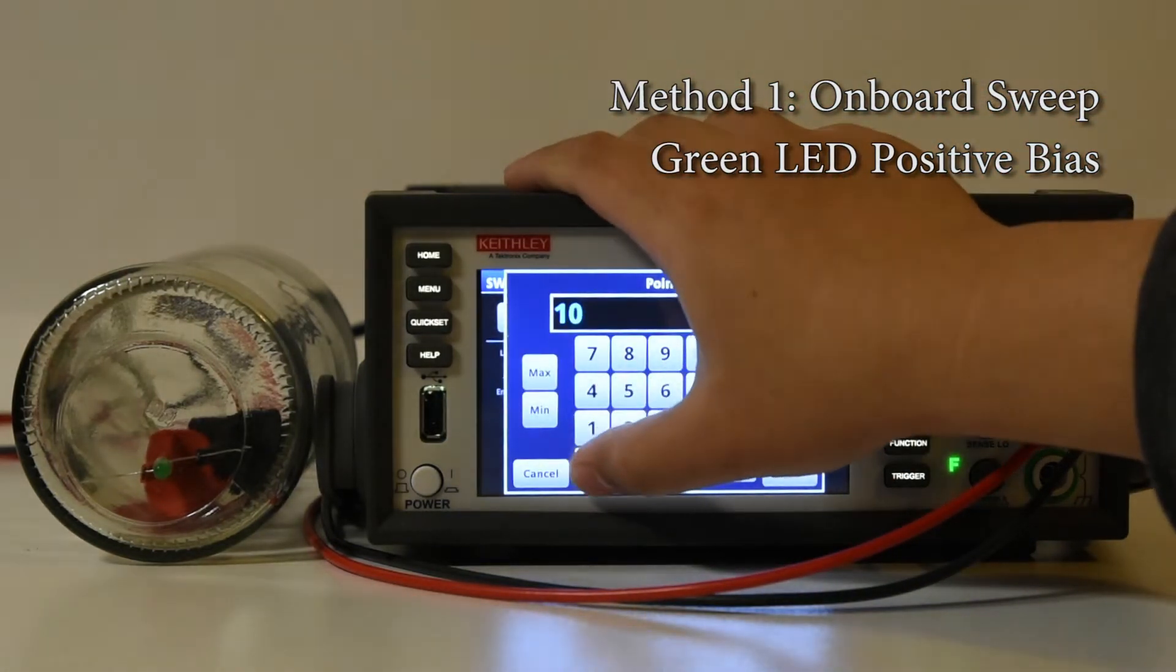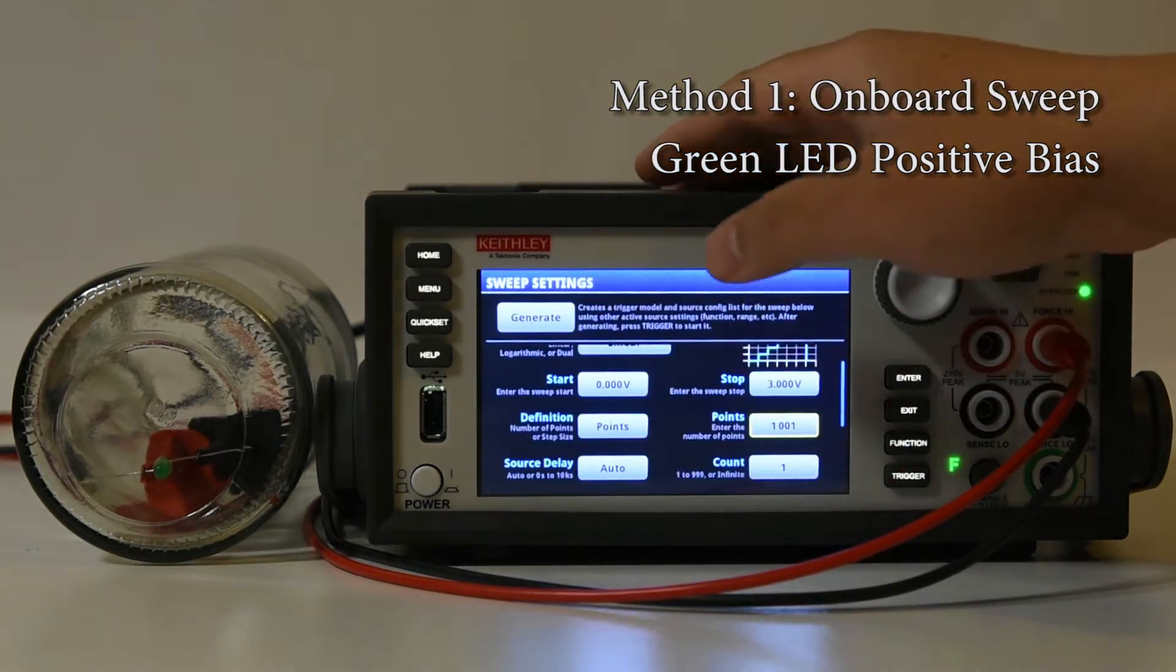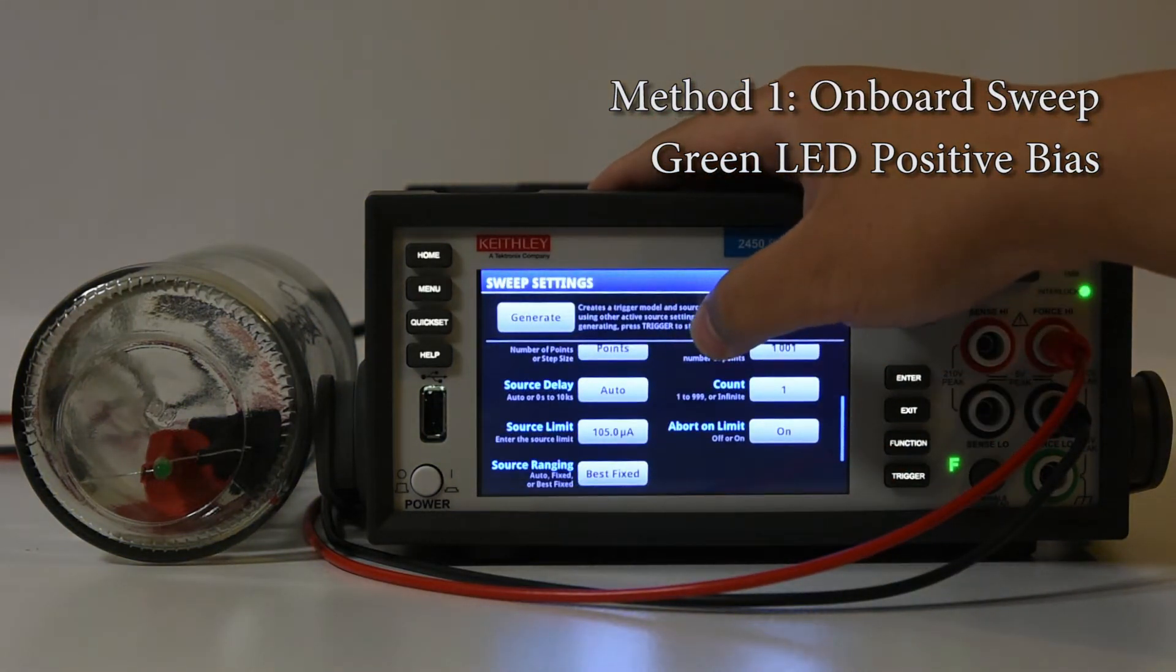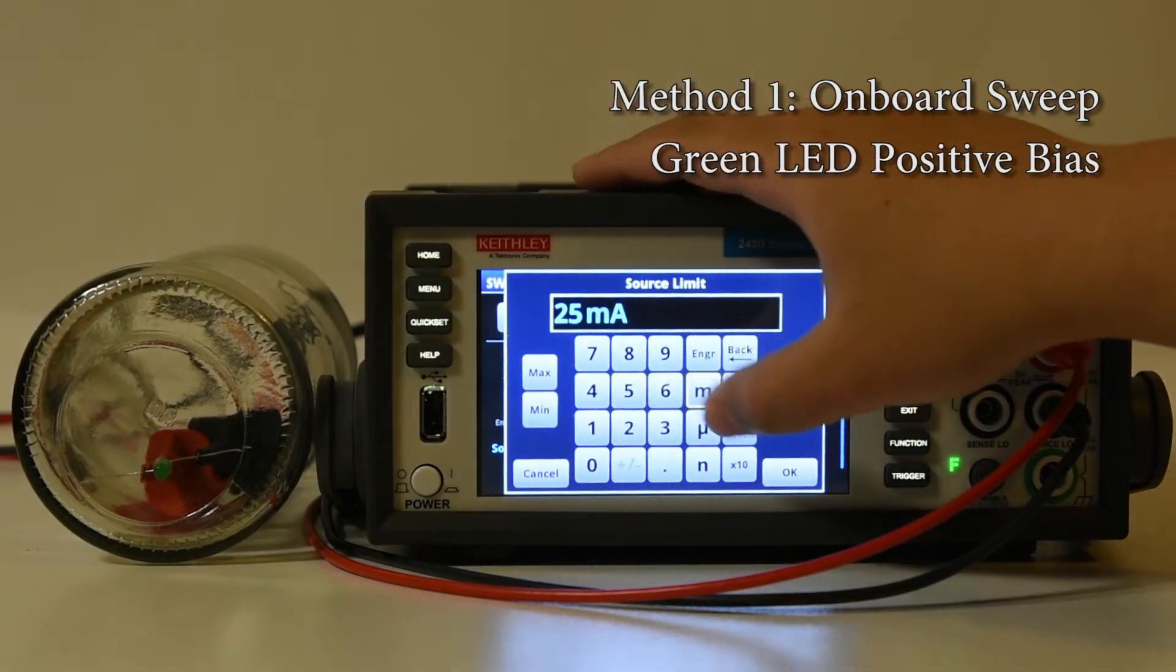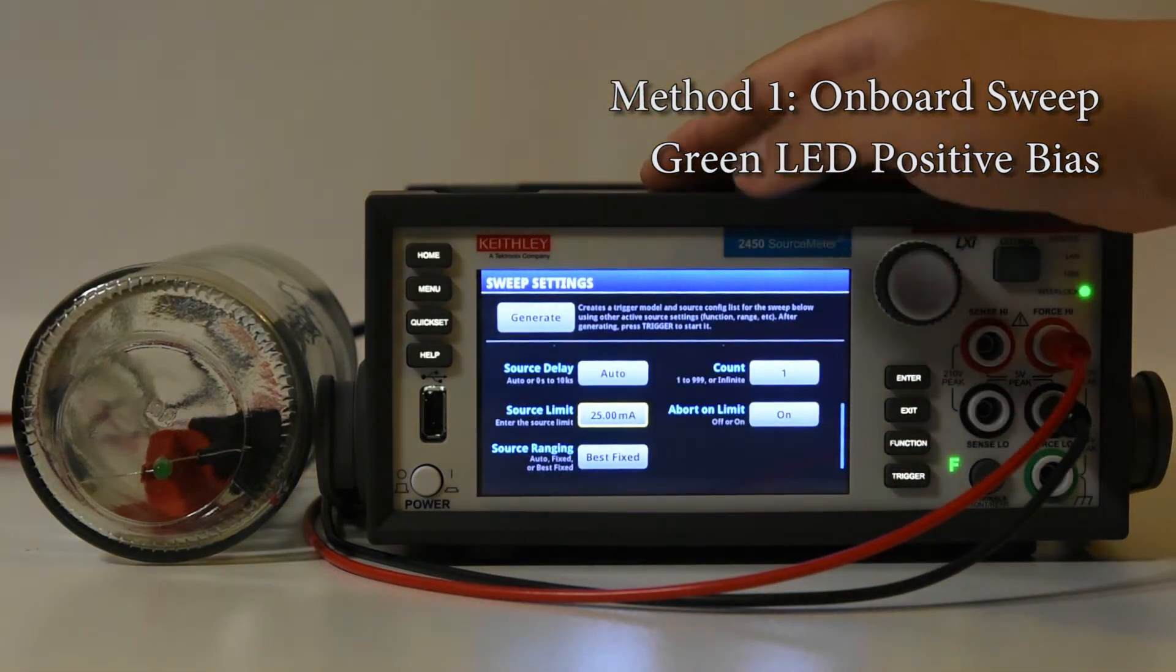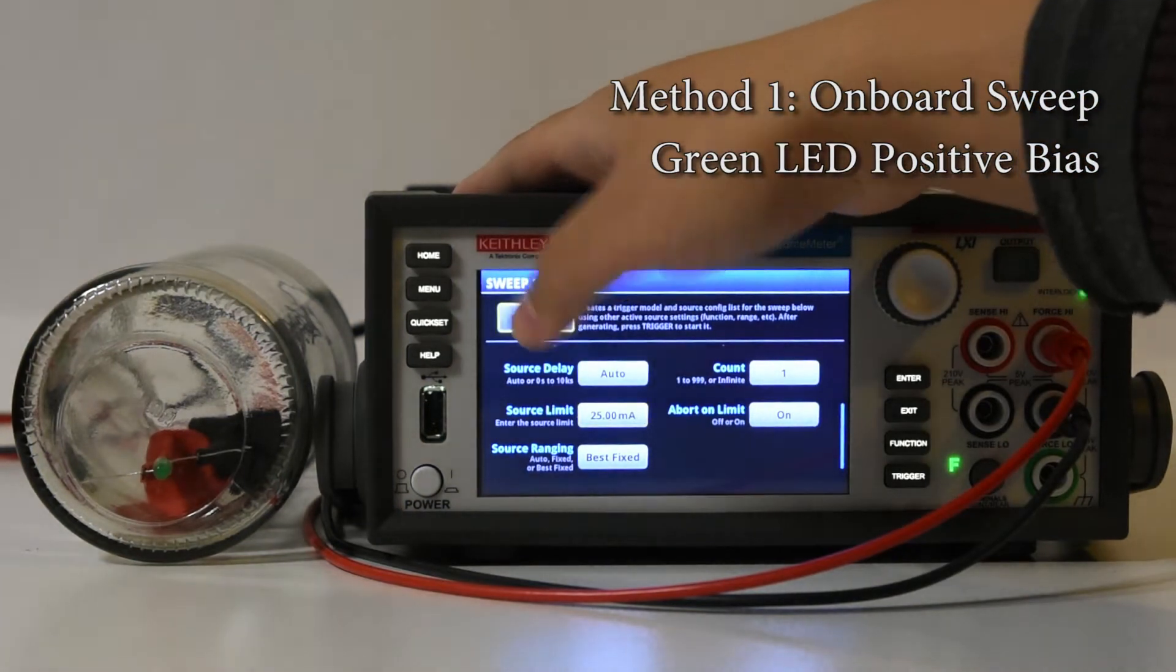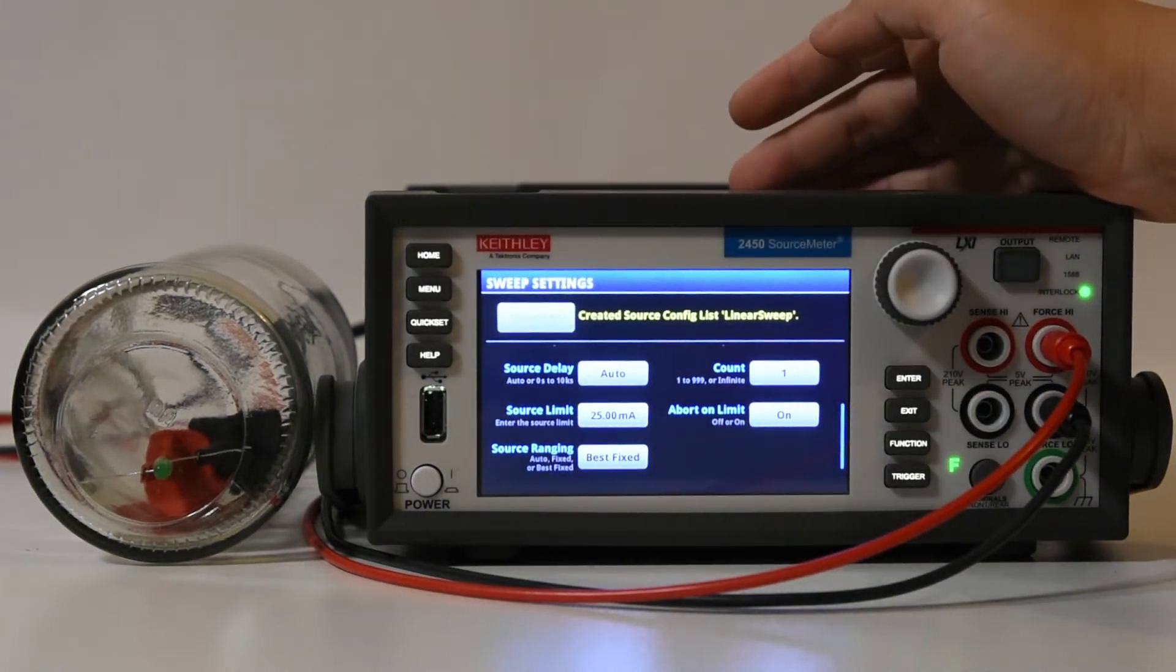In this case I set up a single linear sweep from 0 to 3 volts in 1001 steps, with a current limit of 25mA with the remaining settings on their defaults. This generates a trigger model and source configuration, which can be run from the front panel to perform the sweep.